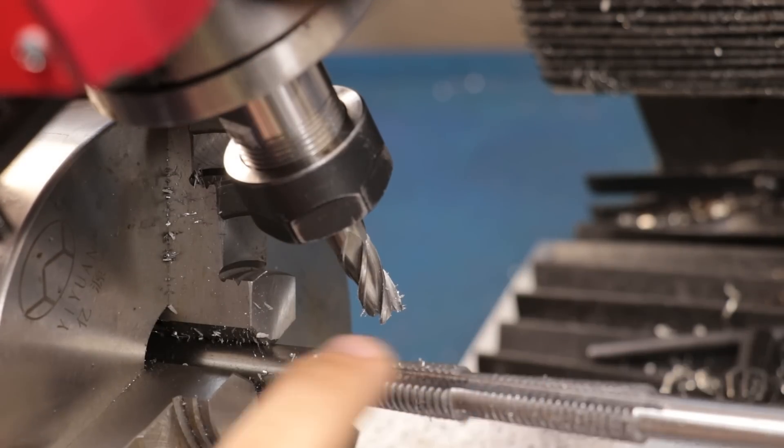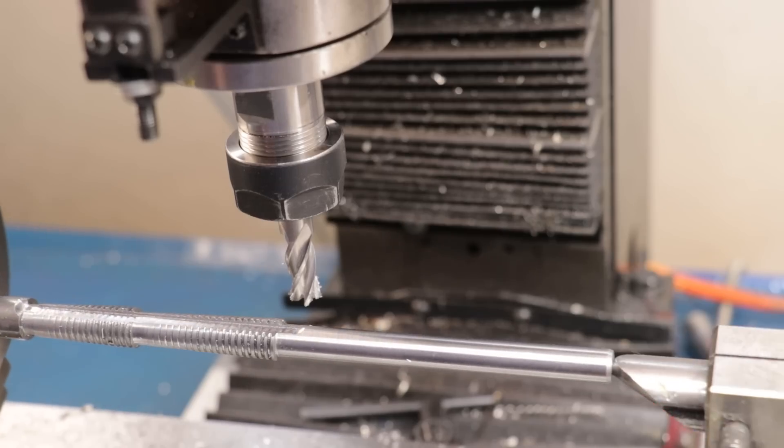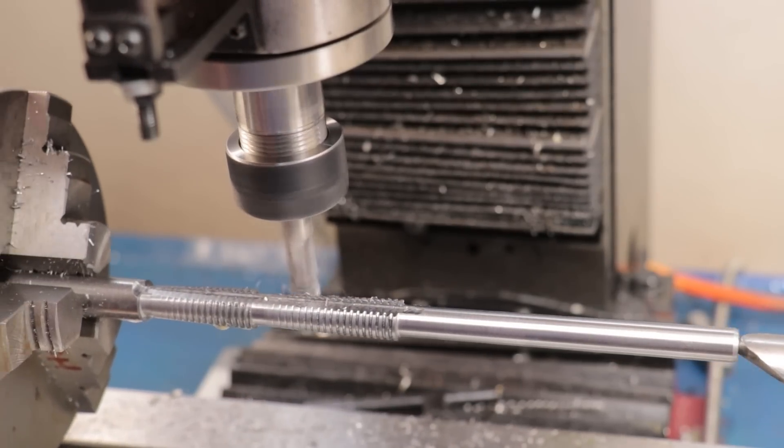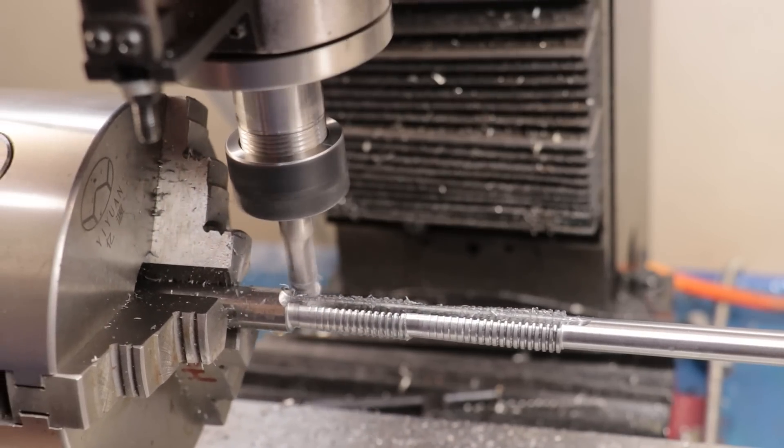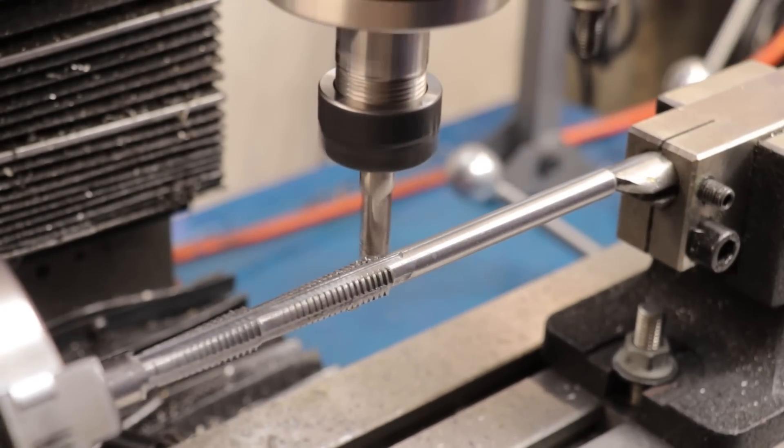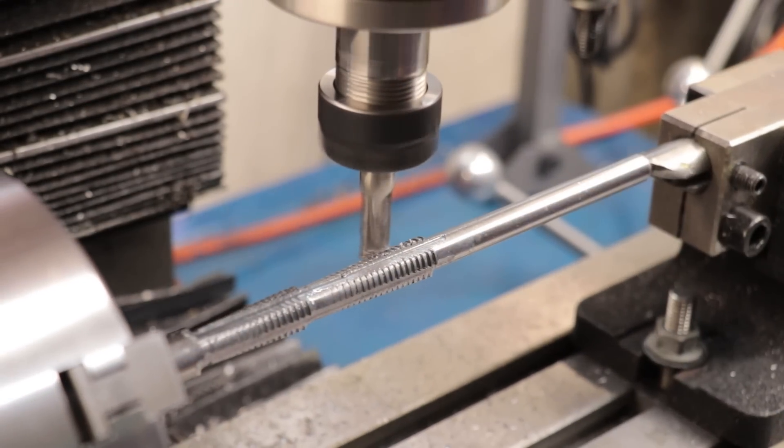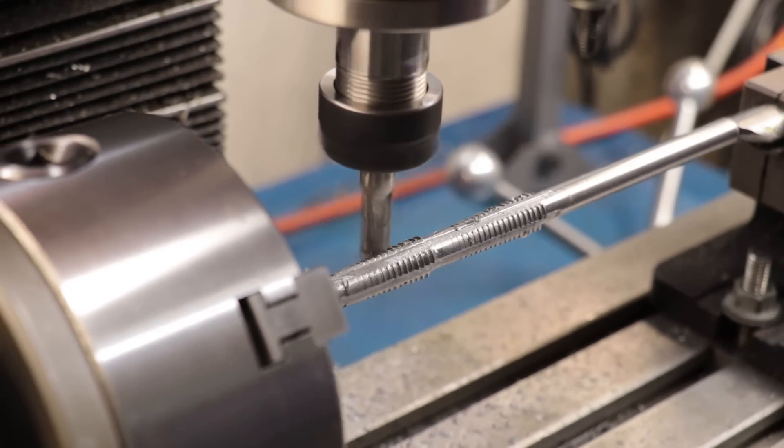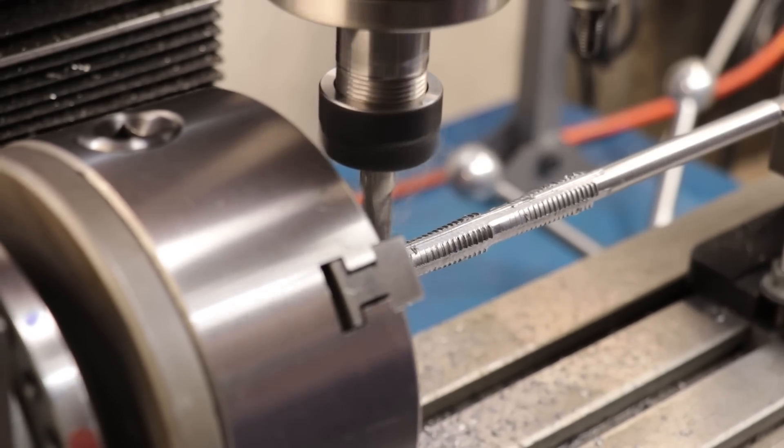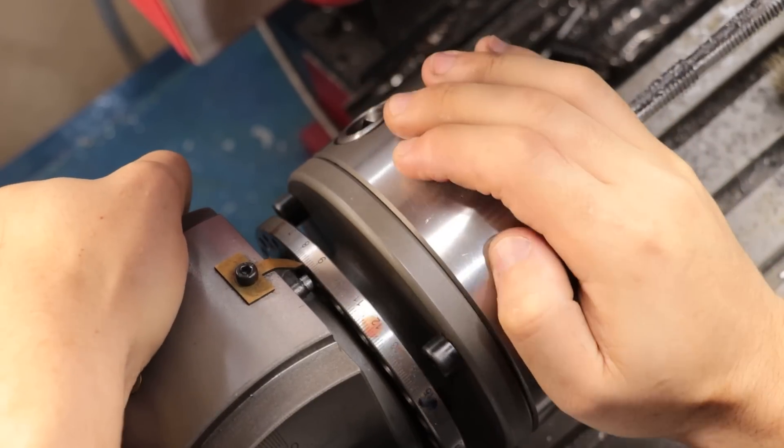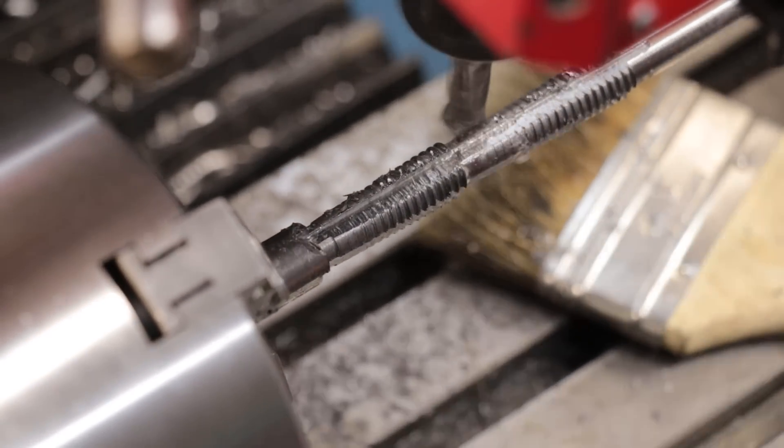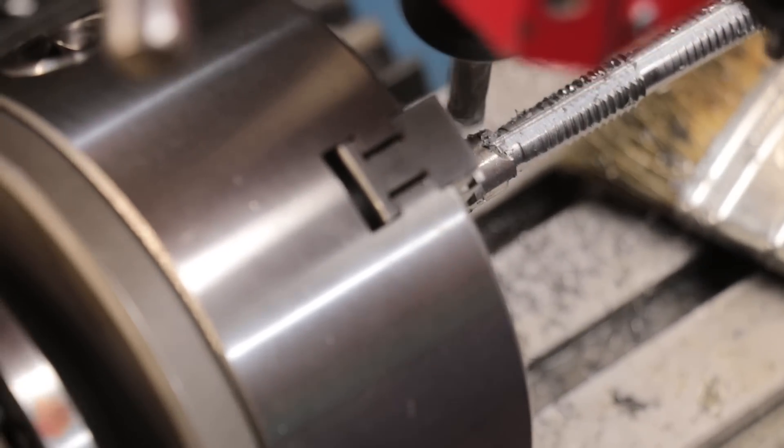All right, and the first cut looks pretty good, so I guess one down, three to go. Now I am choosing to make the flutes a little bit smaller than I normally would. This is mainly just to keep as much material in the core of the tap, and make it as strong as possible. It shouldn't affect the cutting edge, but it will mean that the flutes will fill up a bit faster than they normally would. All right, the flutes are looking pretty good, so I now get the square drive cut.